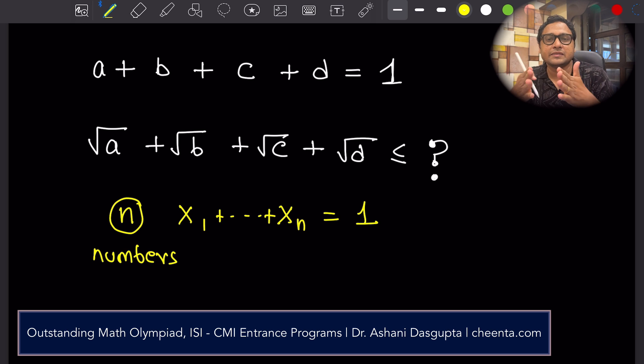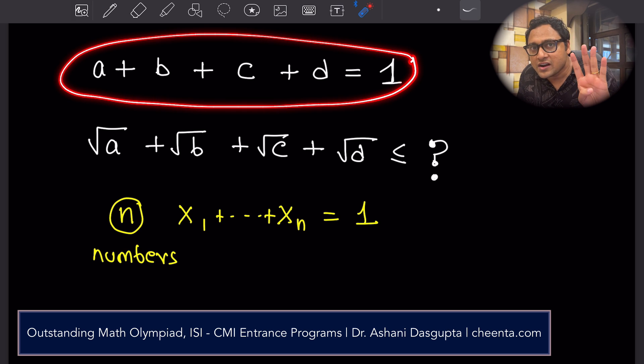Here is a problem solving strategy. Whenever a problem is stated in n numbers, just make it easier for your mind to process. Make n 4 or 5 or 3, whatever. So for example, I have done this for 4 numbers.